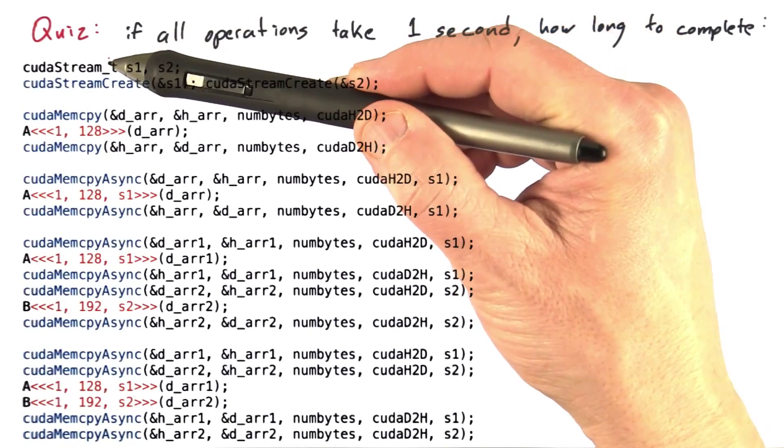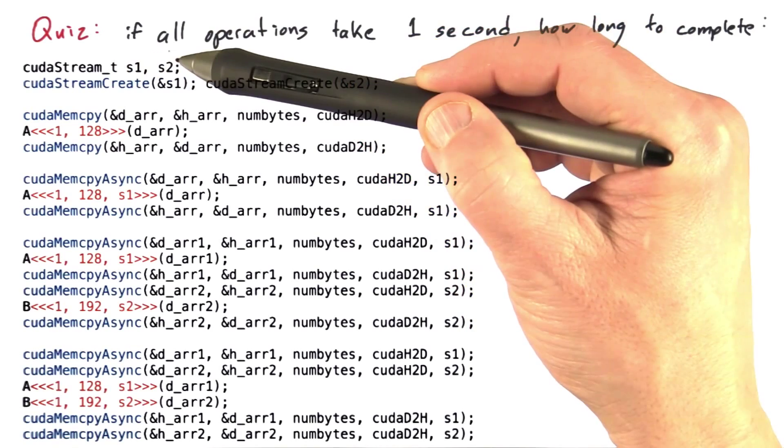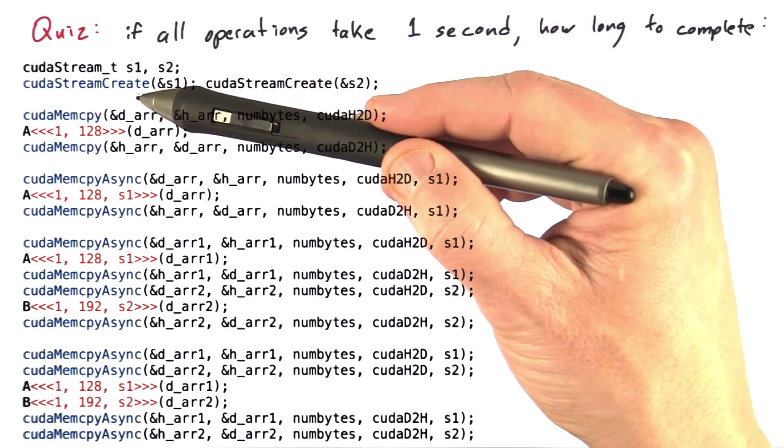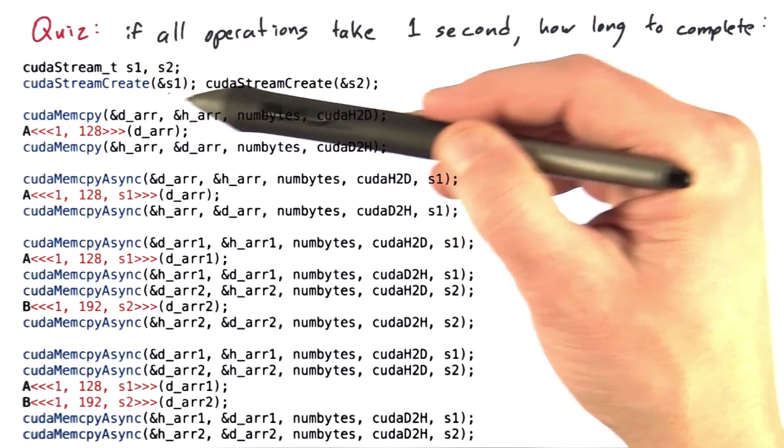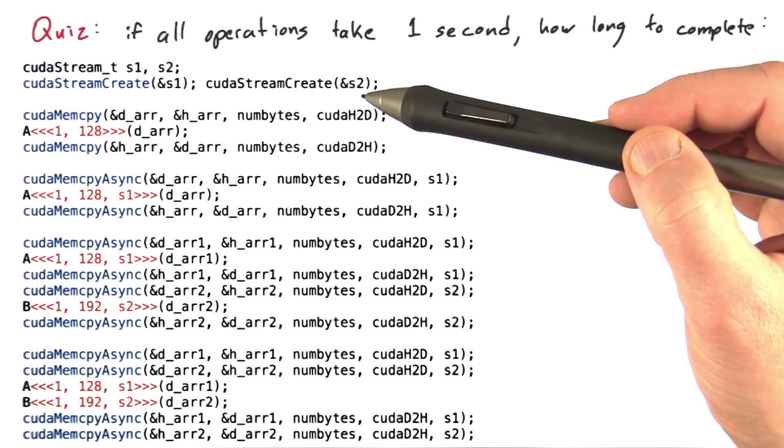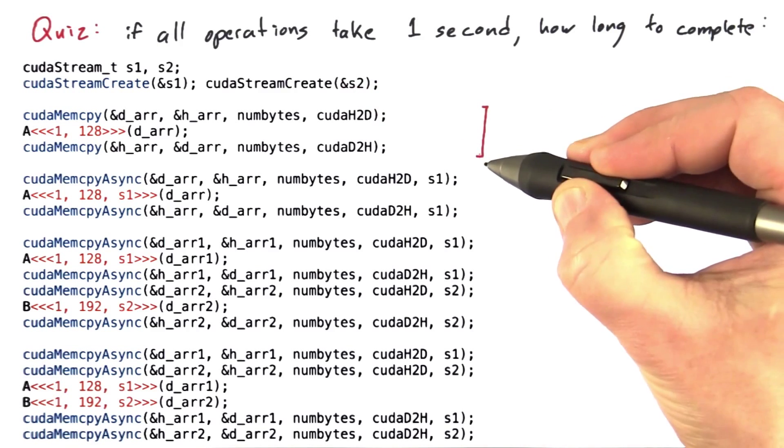So here's the code snippets. We'll start by declaring a couple of CUDA streams, S1 and S2, and use the CUDA stream create call to create streams with those stream objects. Then there's a bunch of code snippets.